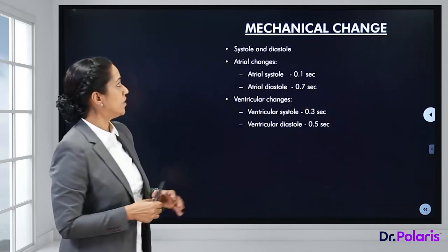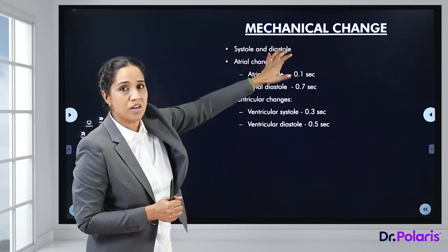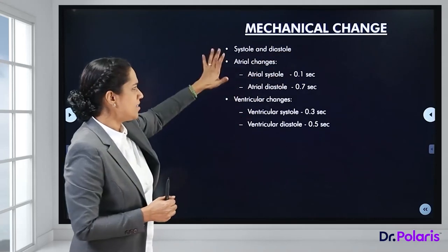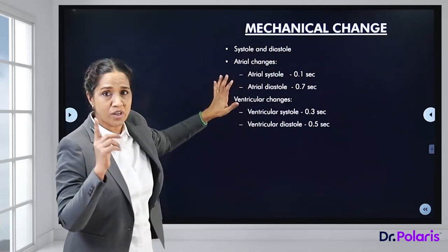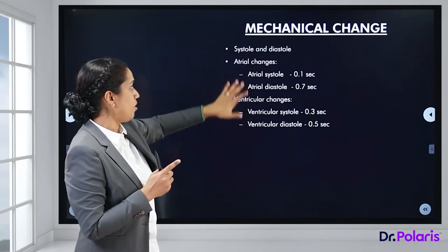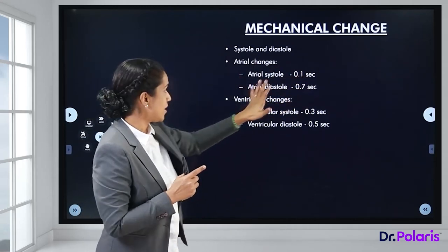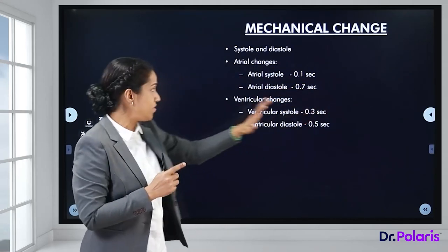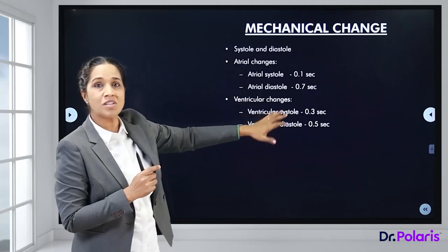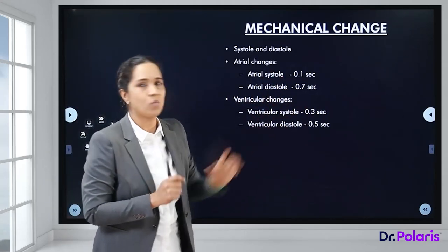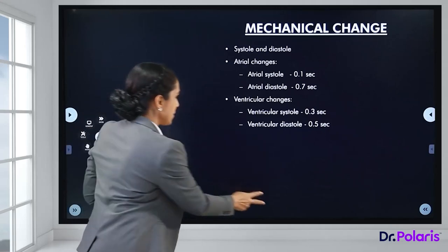To reinforce the mechanical phase timings: atrial systole takes 0.1 seconds, atrial diastole takes 0.7 seconds, ventricular systole takes 0.3 seconds, and ventricular diastole takes 0.5 seconds.